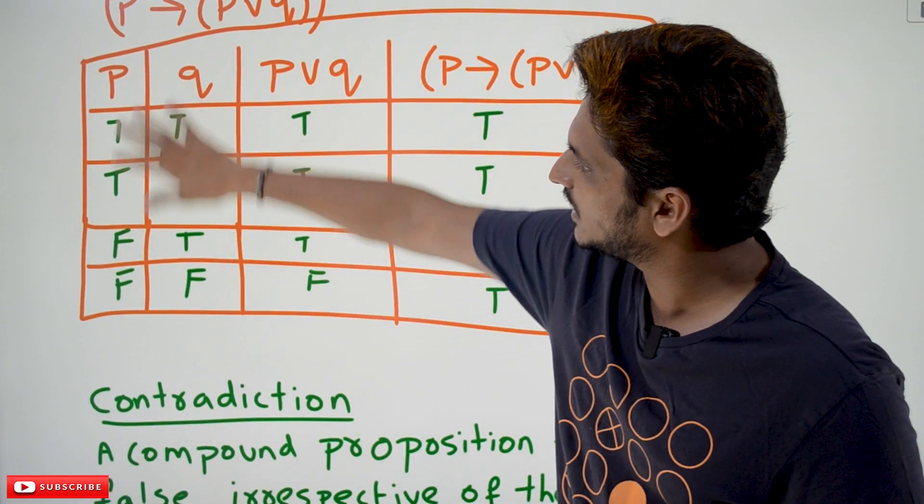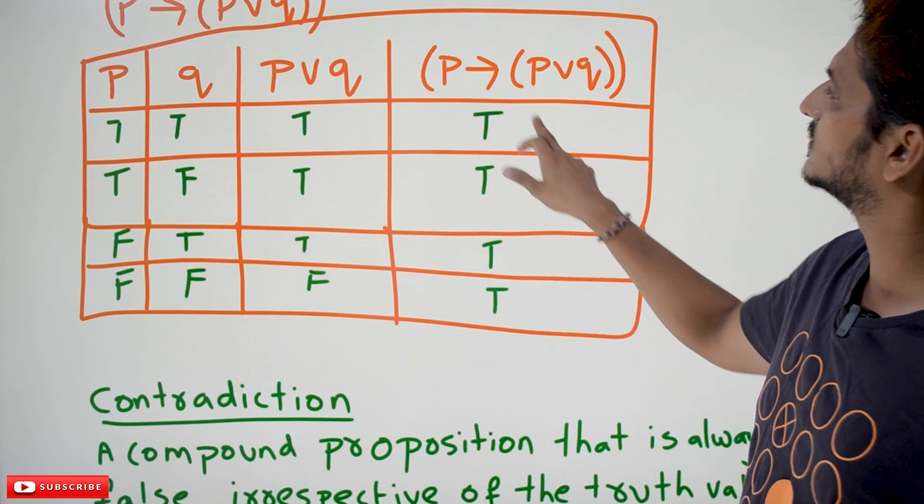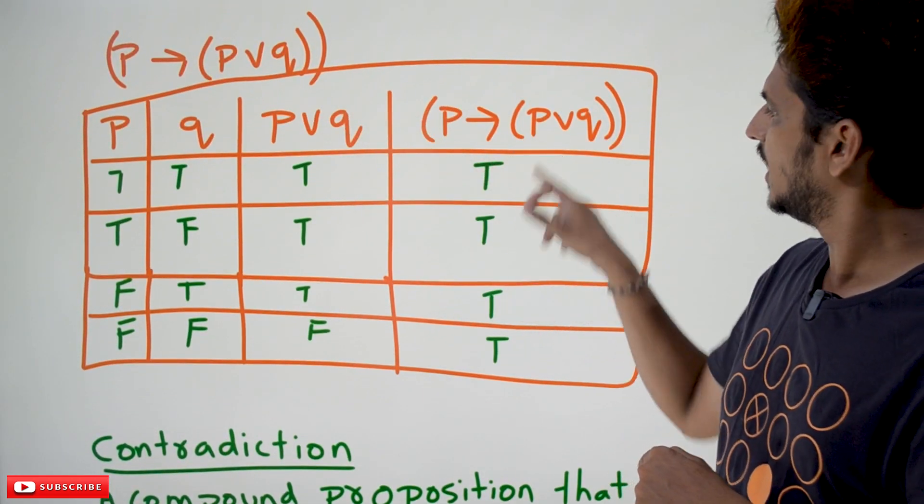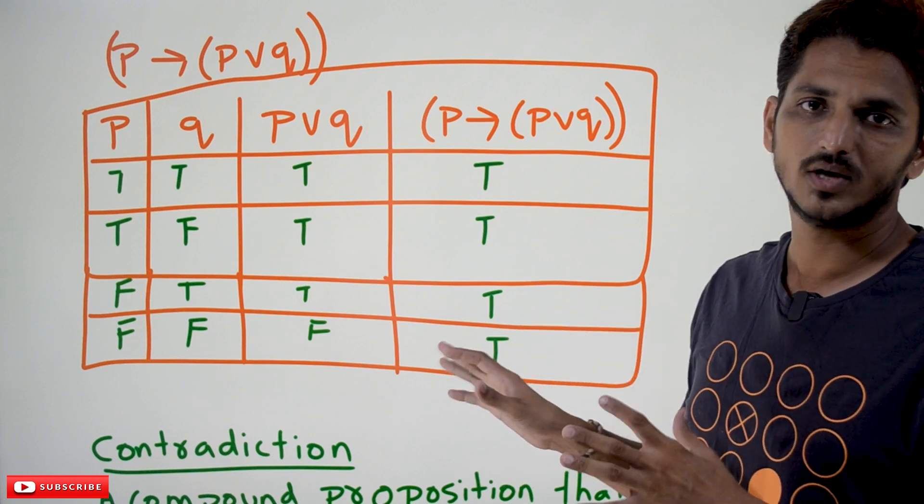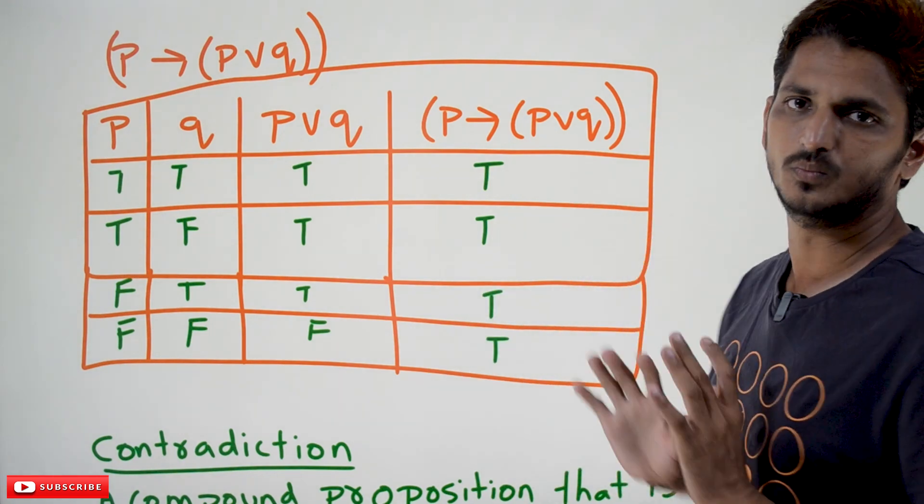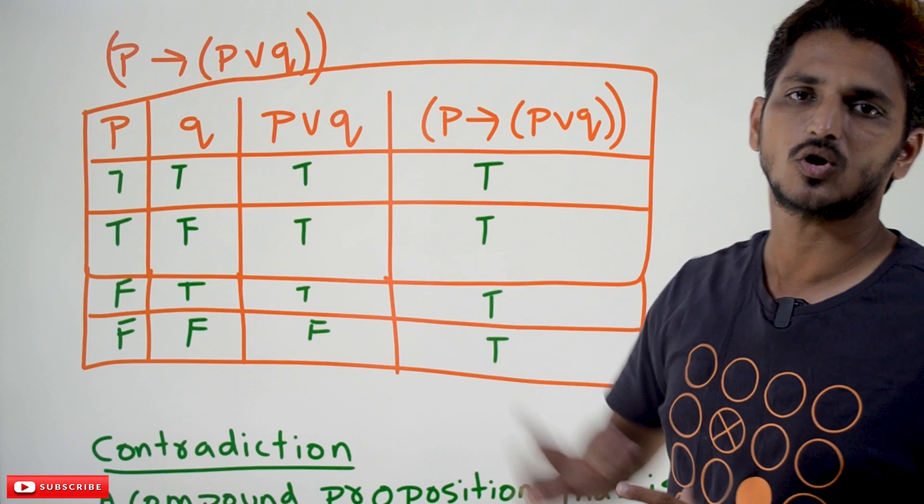So that is why you take any values for our output. Finally, this proposition - what is the output it got? T, T, T, T. Always all the values are true. Then we say it is a tautology.